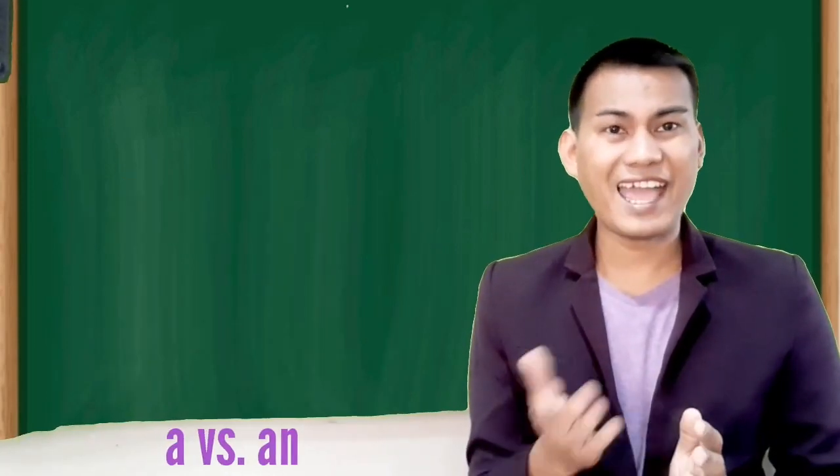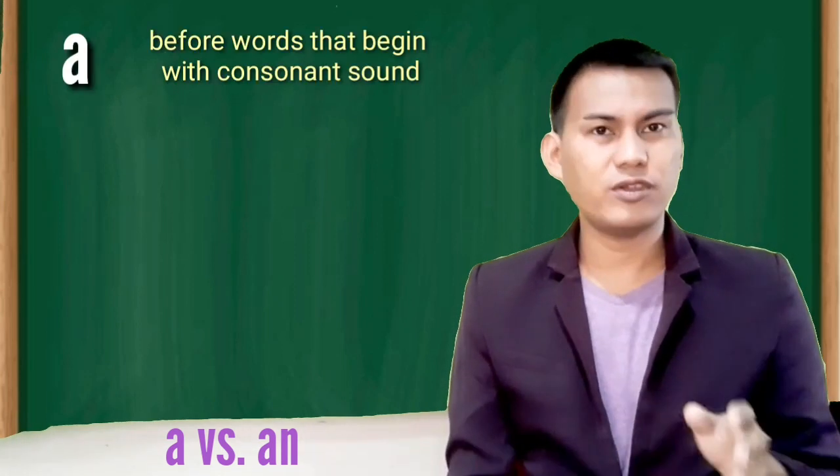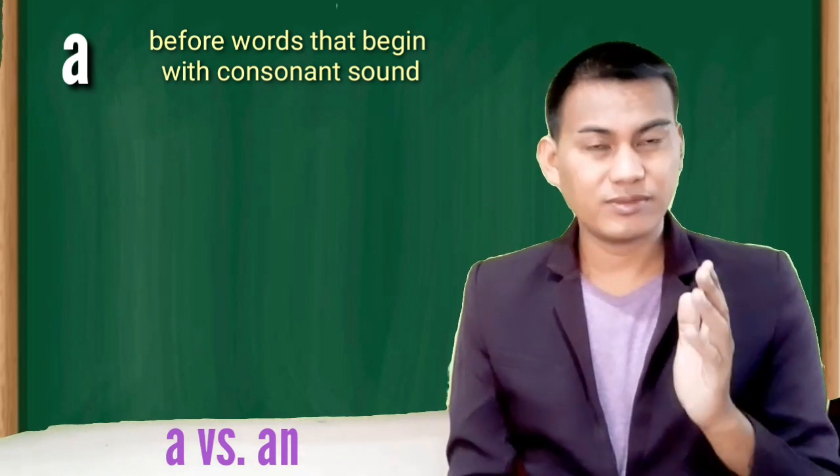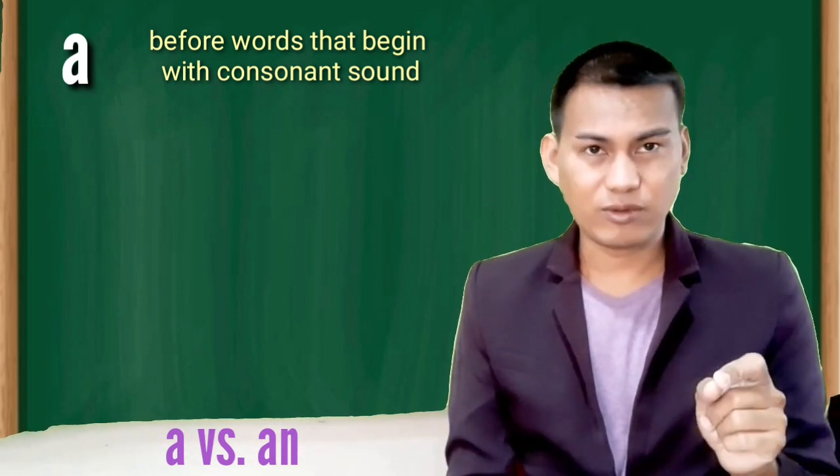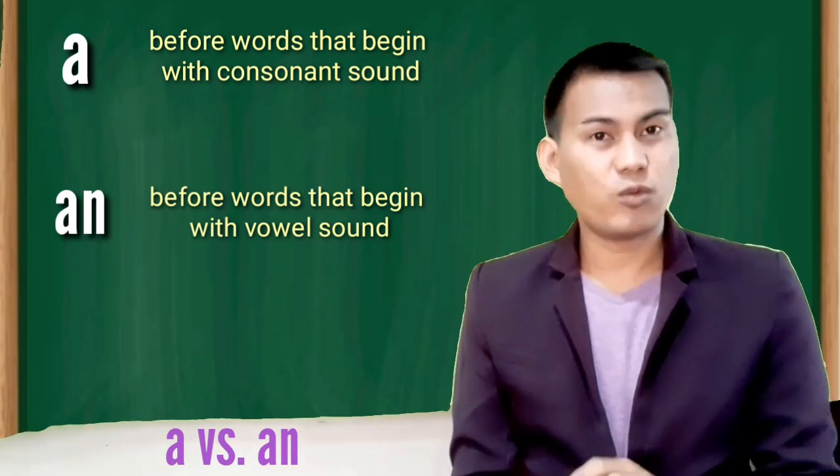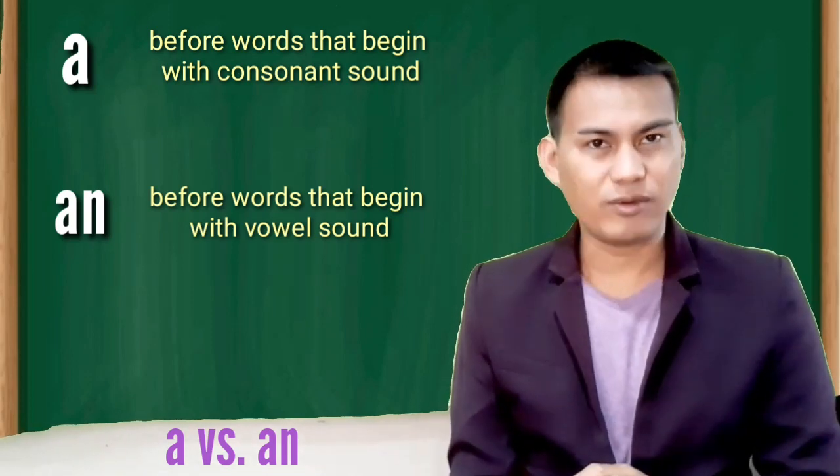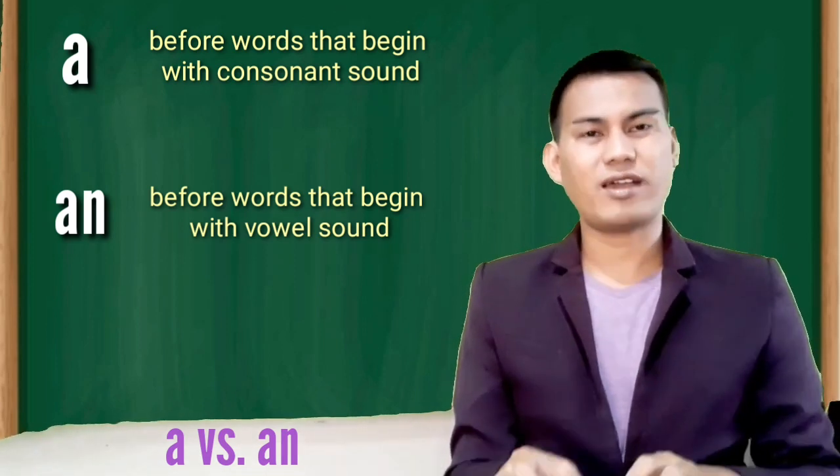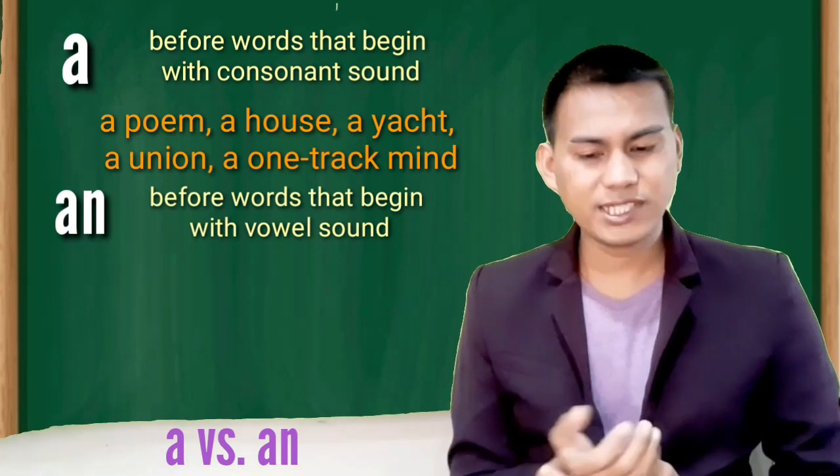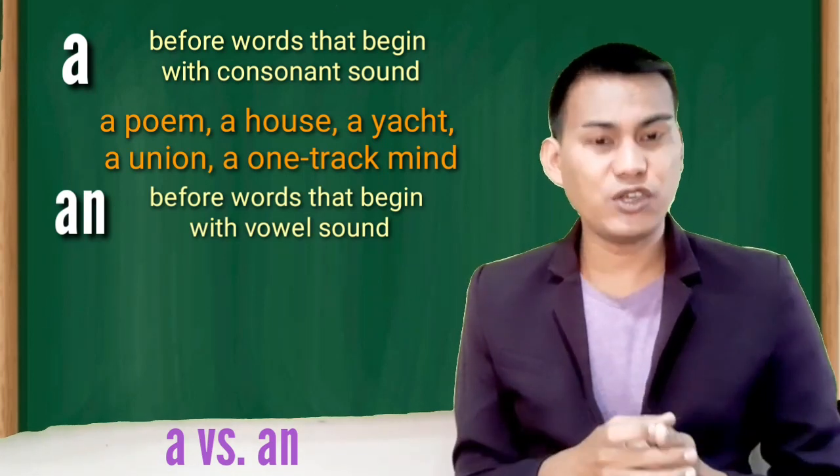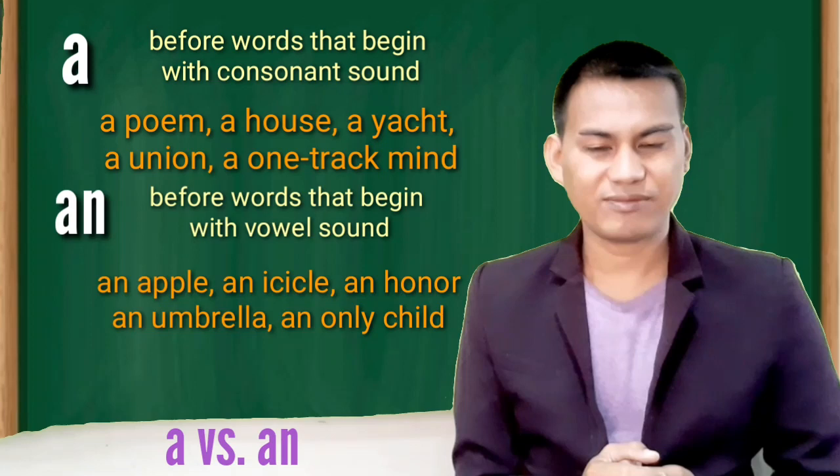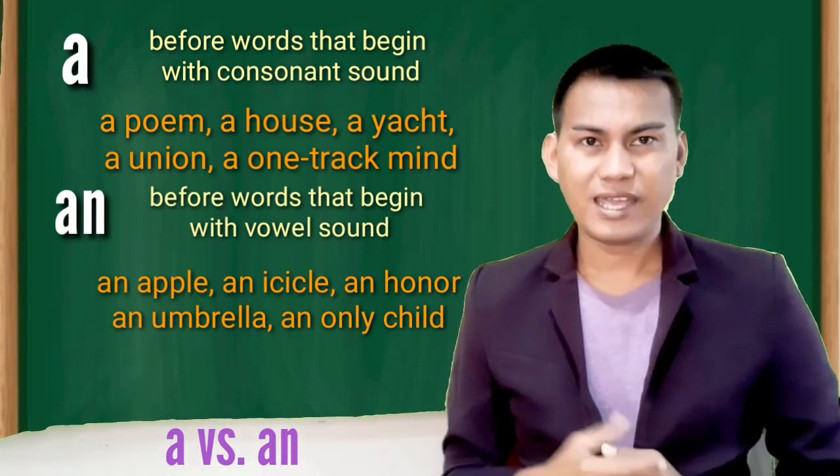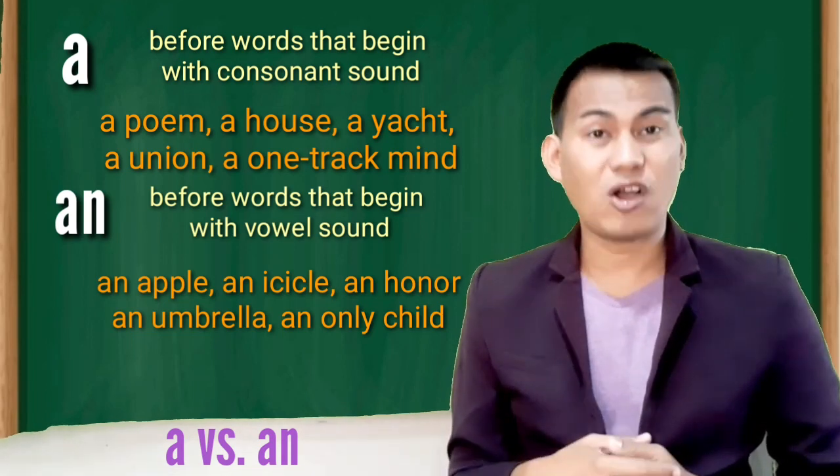Let's start with a very simple A versus AN. Again, we use A before words that begin with a consonant sound, not letters, but sound. Then, we use AN before words that begin with a vowel sound. Again, sounds, not letters. Examples we have there. A poem, a house, a yacht, a union, a one-track mind. An apple, an icicle, an owner, an umbrella, an only child.